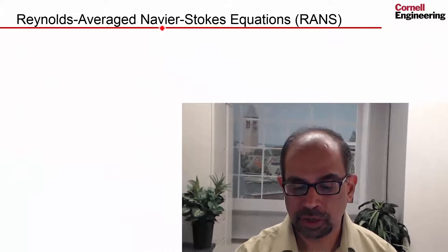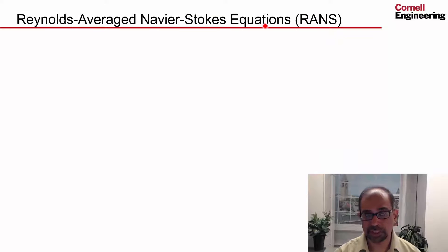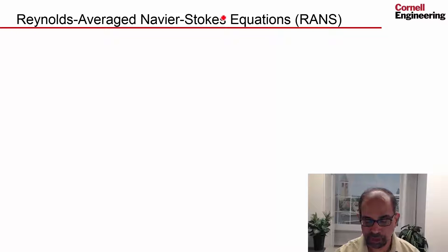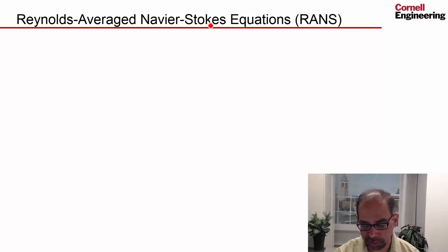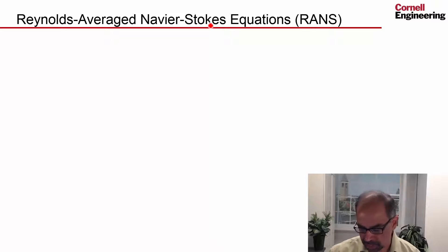Let's consider the Reynolds averaged Navier-Stokes equations, or RANS as it's usually referred to. The Navier-Stokes equations are the name given to the differential form of the conservation of momentum. We'll be looking at the Reynolds averaged version of those equations, which is what we'll be solving using ANSYS Fluent.